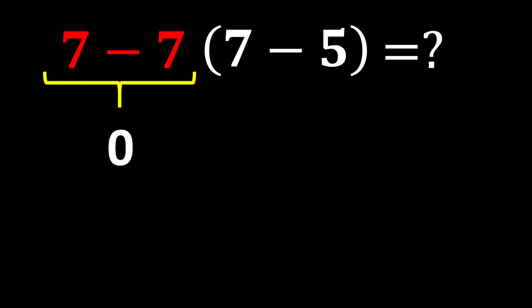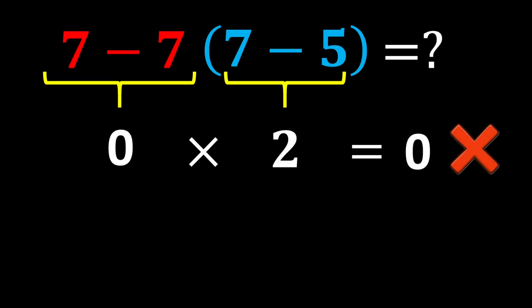7 minus 7 gives us 0, and inside the parentheses 7 minus 5 gives us 2, and 0 multiplied by 2 becomes 0. But this answer is not correct because we did not follow one of the most important rules of mathematics called the order of operations.